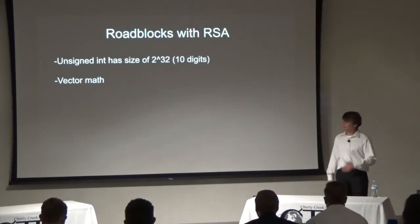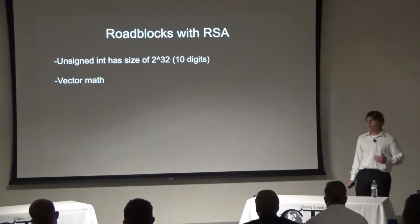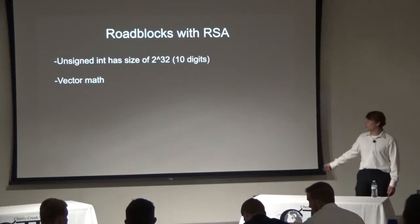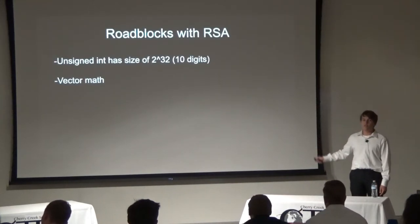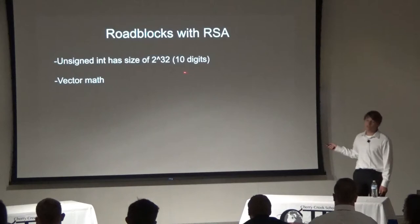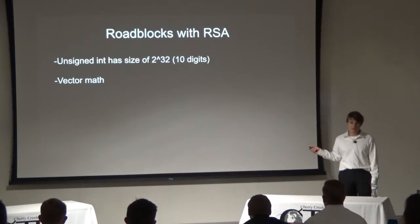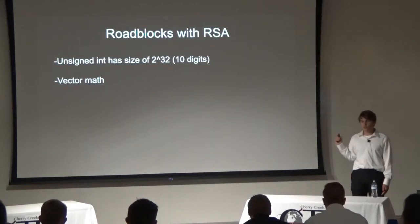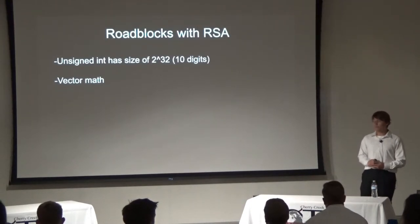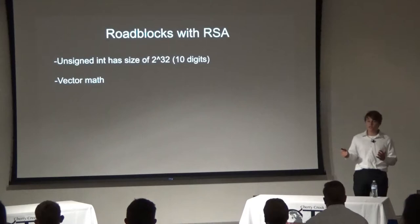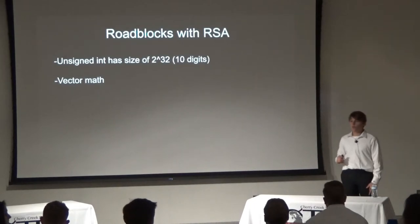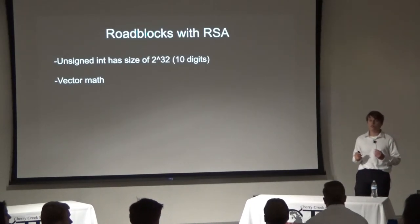A major problem I encountered with RSA encryption is that you cannot get 200-digit-long numbers using standard coding. The largest variable type in C++ is the unsigned int, which has a maximum value of about 4 billion — only 10 digits long. I needed something 200 digits long. My solution was to use vector math, or vectors — basically a list. I used a vector of integers where every single index holds only a single digit. So the number 123 would be stored as three separate indices: 1, 2, and 3.